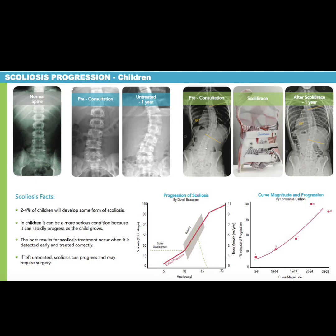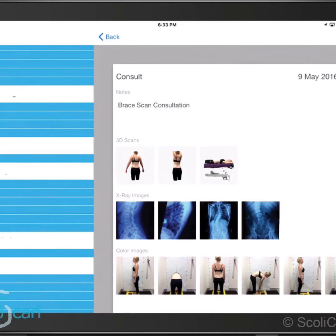Now that we know scoliosis is a 10-degree curvature with rotation of the spine, we can look at why this is so important. Here we have the progression chart showing the normal spine, pre-consultation untreated, and after one year with the Scoli brace. Looking at the progression curve at the bottom left, at age 10 you really have to be cautious — if not caught, children will progress into a surgical candidate where conservative care is no longer warranted.